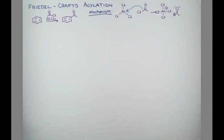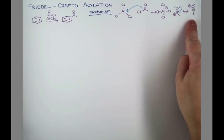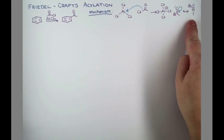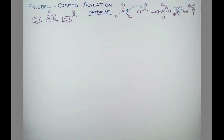The acylium ion also has a resonance form that puts the positive charge on oxygen. This is an important contributing structure because we have an octet on oxygen and on carbon in this form.